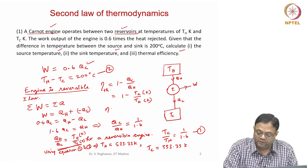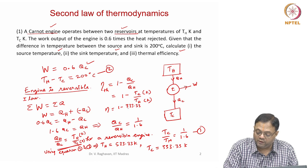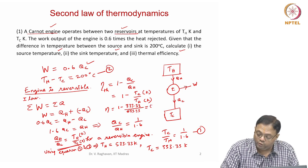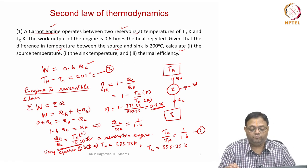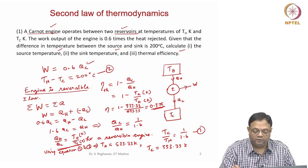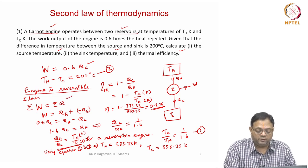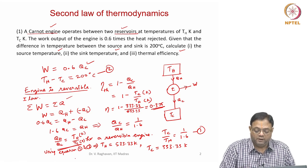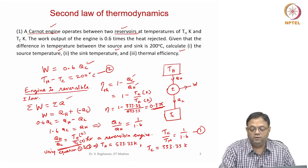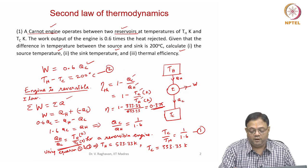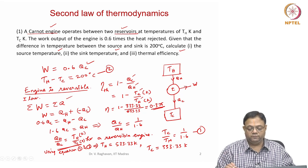The thermal efficiency equals 1 minus 333.33 divided by 533.33, which equals 0.375. That is the Carnot efficiency. There are important concepts here: first, the first law sigma W equals sigma Q gives this relationship; then for the reversible engine, the ratio of heat transfers equals the ratio of the corresponding reservoir temperatures, and temperature must be in Kelvin.